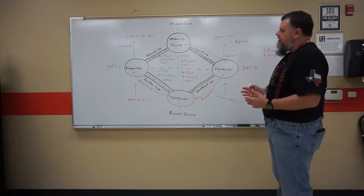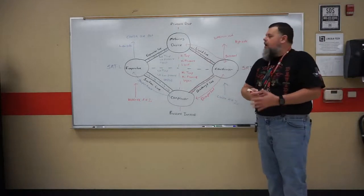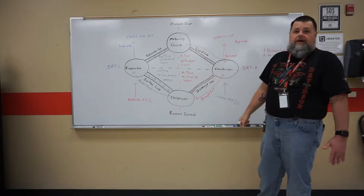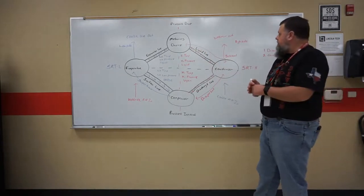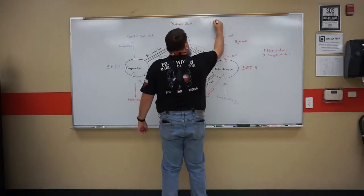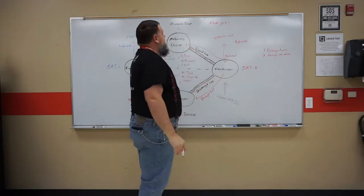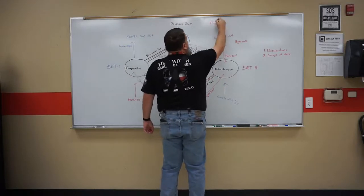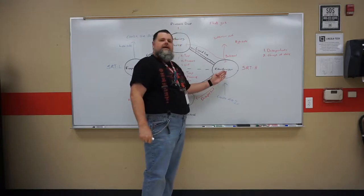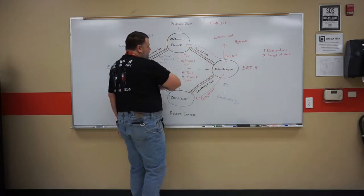Now what does superheat and subcool tell us when we're working on a system? Basically they tell us how the charge is, how much heat we're picking up. Are we getting a solid column of liquid refrigerant all the way up to the metering device? You do have what you call flash gas. What is flash gas? Flash gas. So basically any gas or any vapor that does not get condensed into a liquid here, into our condenser, goes through the system, has to go all the way back around.